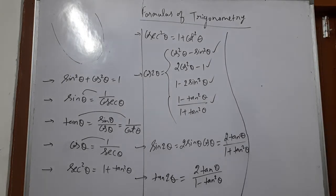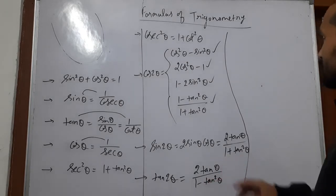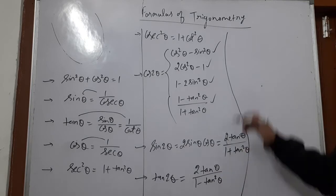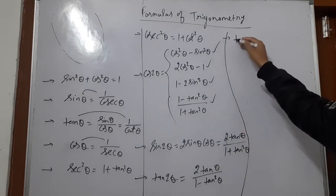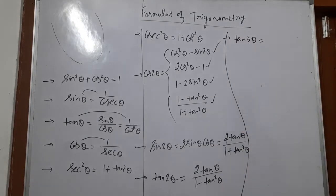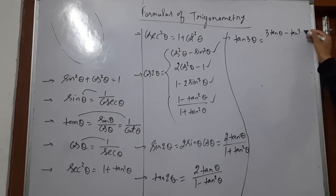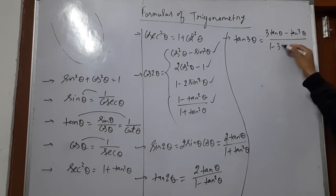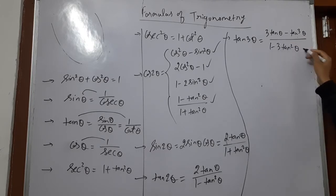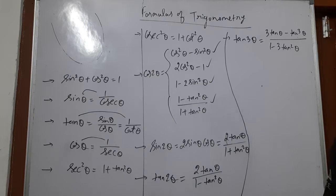We should go to the next formula. After tan 2 theta, another formula is for tan 3 theta. Tan 3 theta is equal to 3 tan theta minus tan to the power 3 theta, divided by 1 minus 3 tan square theta.